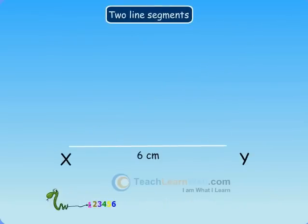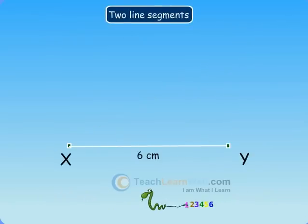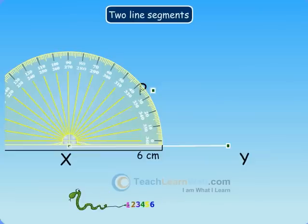Draw XY of length 6 cm. At X, draw a ray XP making an angle of 30 degrees with XY.